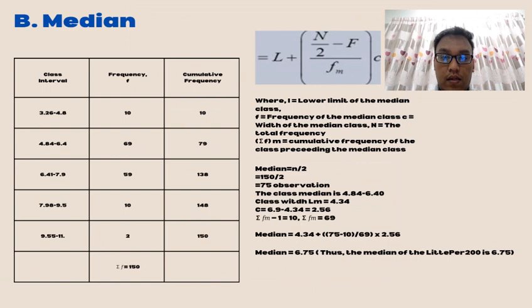The next part is median. The median formula is N divided by 2. We get 75 observations. The class median is 4.84 until 6.40. The class with lower boundary is 4.34. C is 6.9 minus 4.34, we get 2.56 for the calculation. We get the median is 6.05. Thus, the median of liter per 200 is 6.75.